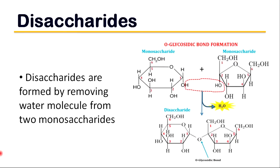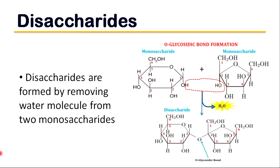Disaccharides are formed by removing a water molecule from two monosaccharides and are a major source of energy in the diet. The most common disaccharides are sucrose, lactose, and maltose.